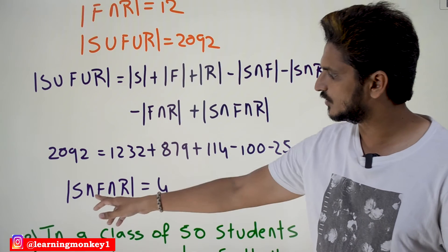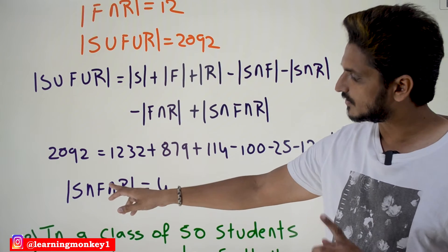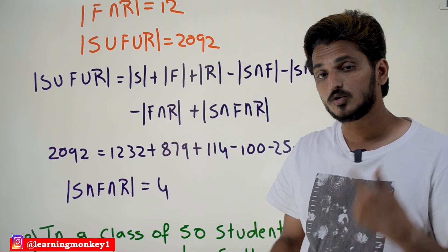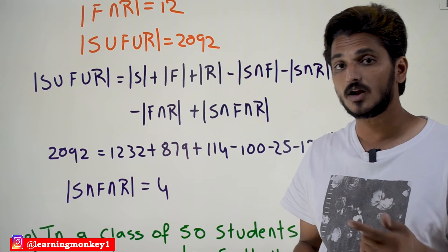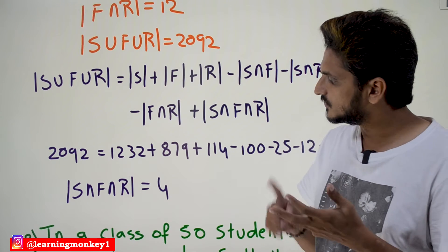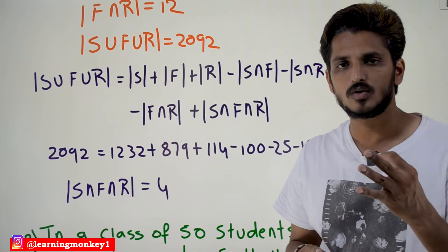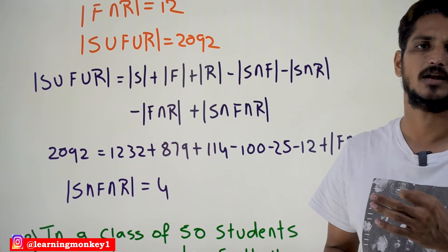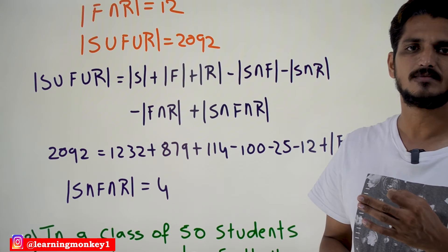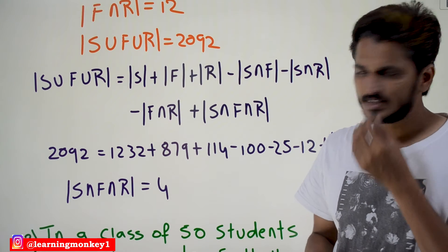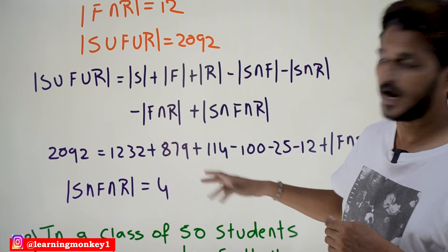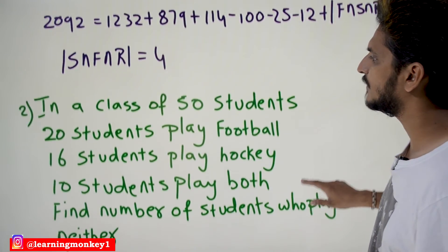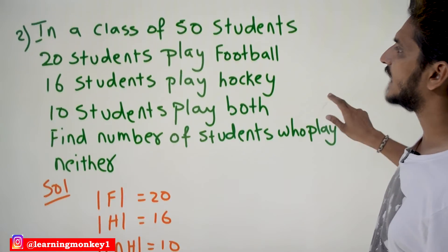Solving that equation gives us 4 students who have taken all three courses — Spanish, French, and Russian. This is how these examples work. For better understanding, we will take one more example: in a class of 50 students total, 20 students play football and 16 students play hockey.